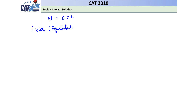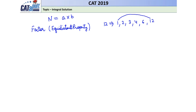Equidistant property of factors. If the original order is maintained, then equidistant factors, if we multiply them, give the same number. For example 12 — the factors of 12 are: 1, 2, 3, 4, 6 and 12. Now they are written in ascending order, and if you see: 1 multiplied by 12 — they are equidistant — gives us 12. 2 multiplied by 6 gives us 12. 3 multiplied by 4 gives us 12 again.